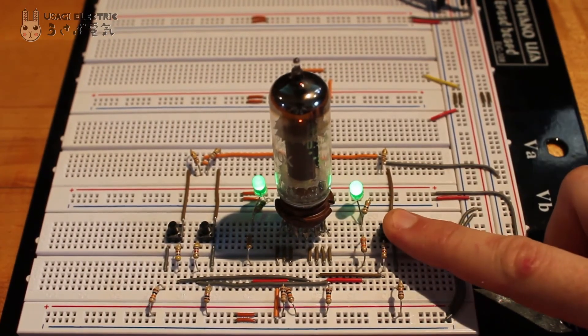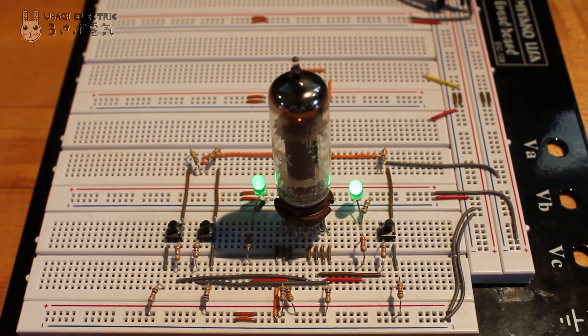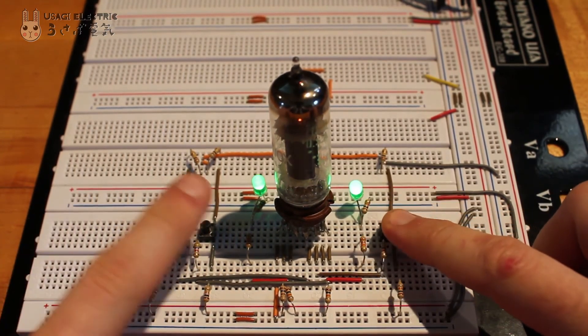Pushing either of the top control grid buttons without pushing the bottom grid button doesn't allow current to flow and our output remains high.